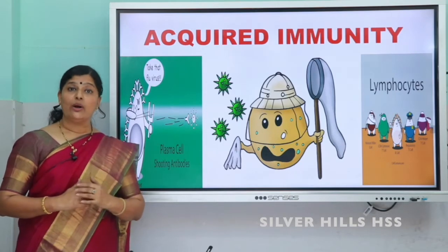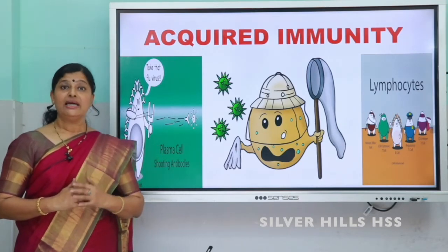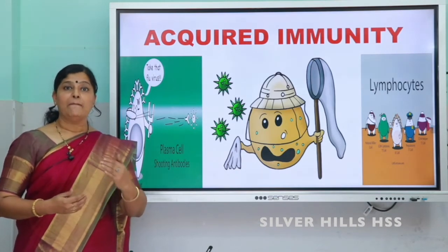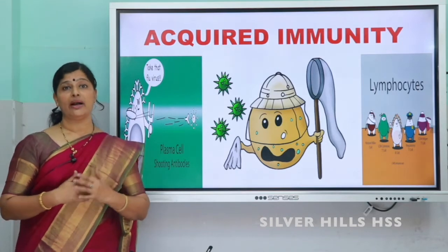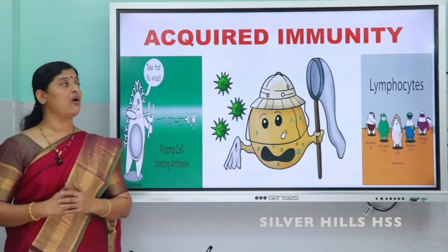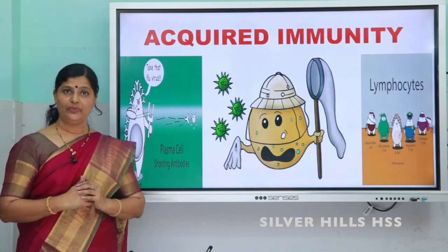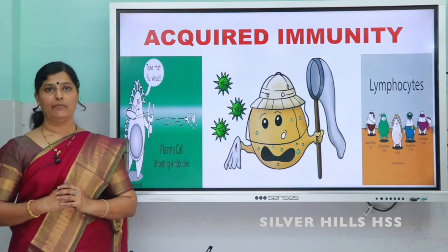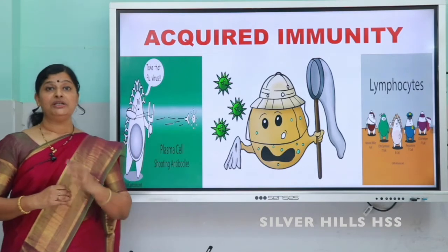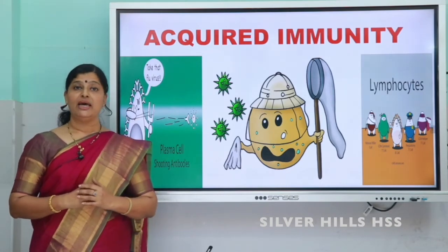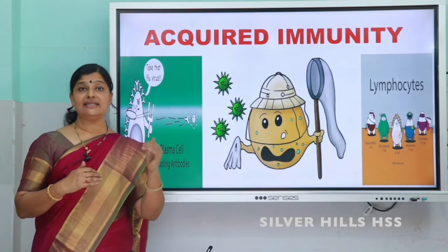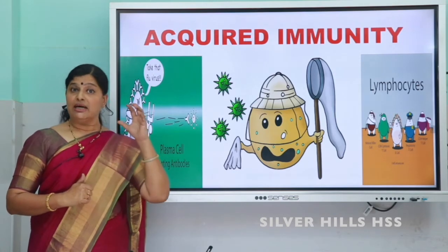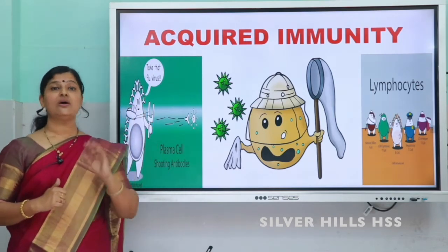So what is meant by acquired immunity? The immunity that we develop during our lifetime by the exposure to microorganisms or foreign agents is called acquired immunity. Let's learn more about acquired immunity with the help of an example. Let's take the case of a chickenpox virus. Suppose a chickenpox virus is entering into the body of a person for the first time. This chickenpox virus has a protein which is called an antigen.